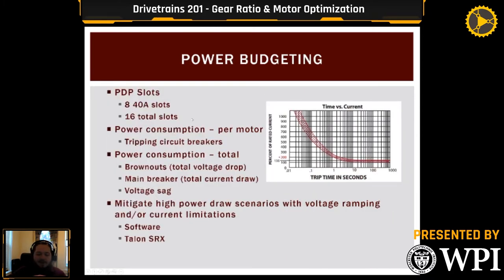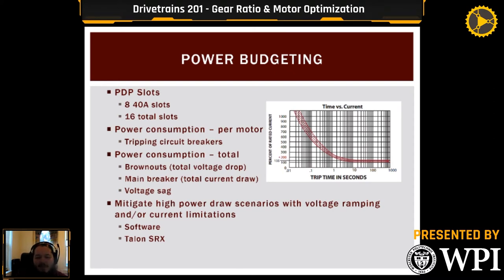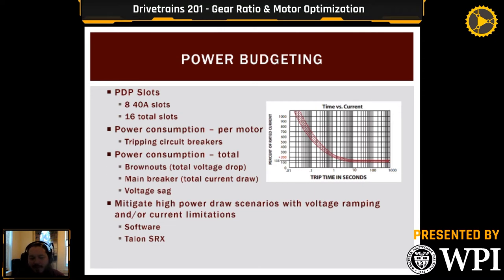Moving into power budgeting. You only have 16 Power Distribution Panel slots in 2020, so you have to allocate those not just for your drivetrain but for your whole robot. If you assign eight to ten motors to a swerve drive, you won't have many slots left for the rest of your robot. Moreover, only half of those slots can fit a 40 amp breaker, and generally you want your drivetrain motors on 40 amp breakers.